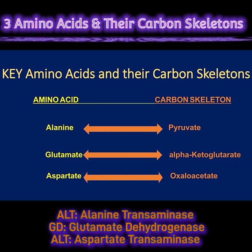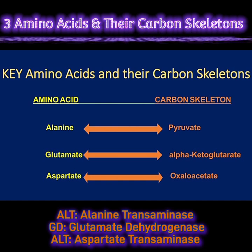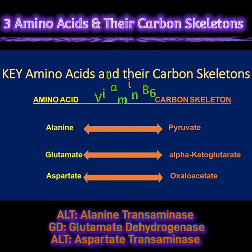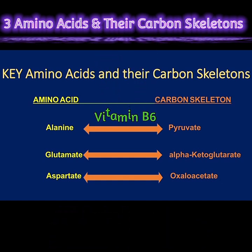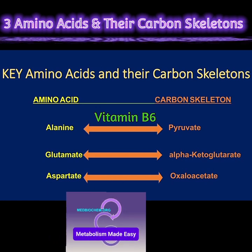Importantly, the ALT reaction is reversible. It can go either way — from alanine to glutamate, or from glutamate to alanine. It requires vitamin B6, or pyridoxal phosphate, as a coenzyme.